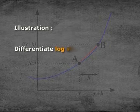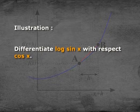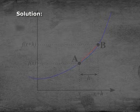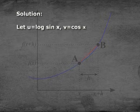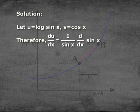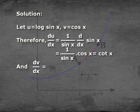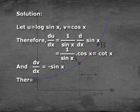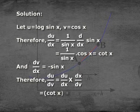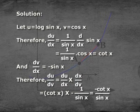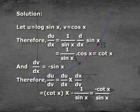Illustration: Differentiate log(sin x) with respect to cos x. Let u = log(sin x) and v = cos x. Then du/dx = (1/sin x)·cos x = cot x, and dv/dx = −sin x. Therefore, du/dv = (du/dx)·(dx/dv) = cot x × (−1/sin x) = −cot x / sin x.